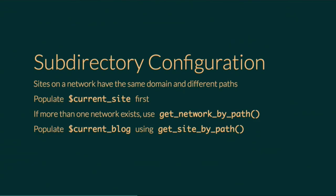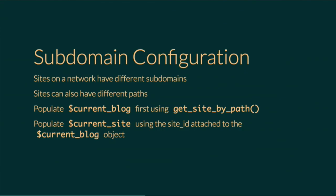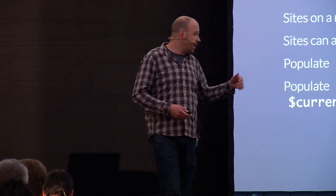Once you have those details — the current blog and current network — WordPress has pretty much decided where it's going to go and what tables it's going to load. It can do that in two different ways by default. If you have a subdirectory configuration, all of the sites on your network have the same domain with different paths, so WordPress assumes it only has to look for the path — it populates the current network using get_network_by_path, then uses get_site_by_path to populate the current blog object. If it's a subdomain configuration, sites can have different domains and paths, so we skip network detection and go straight to site detection using get_site_by_path.